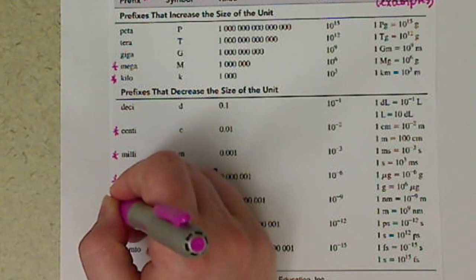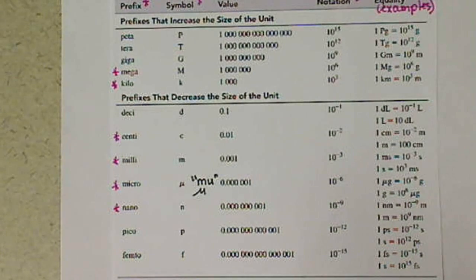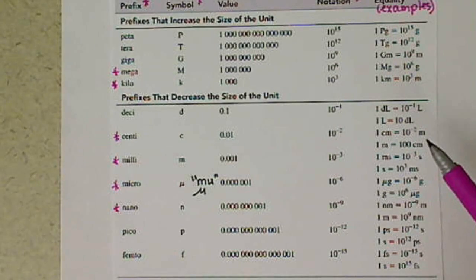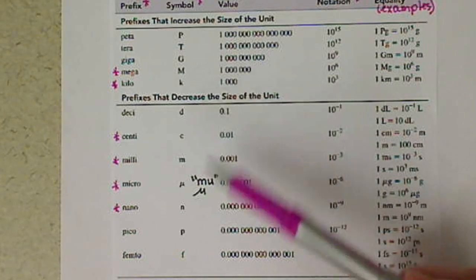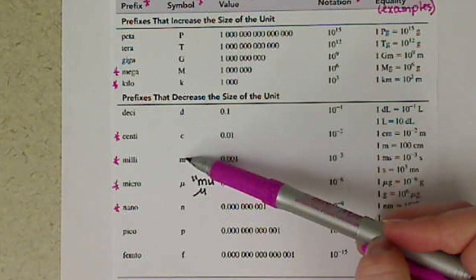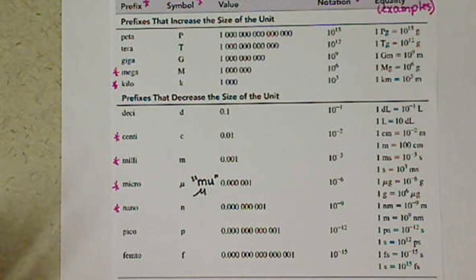Nano is one - again, depending on the branch of chemistry that you go into or science that you go into, you may see that more often. Others of you may not see it very often. And pico and femto probably won't see outside of chapter one. So basically the starred things are what you're going to want to memorize. One thing to point out is M is a very common symbol used in chemistry. The mega is a capital M versus milli is a lowercase m. So you want to make sure you keep those very distinct. And then the mu looks like an M. So keep that in mind as well.